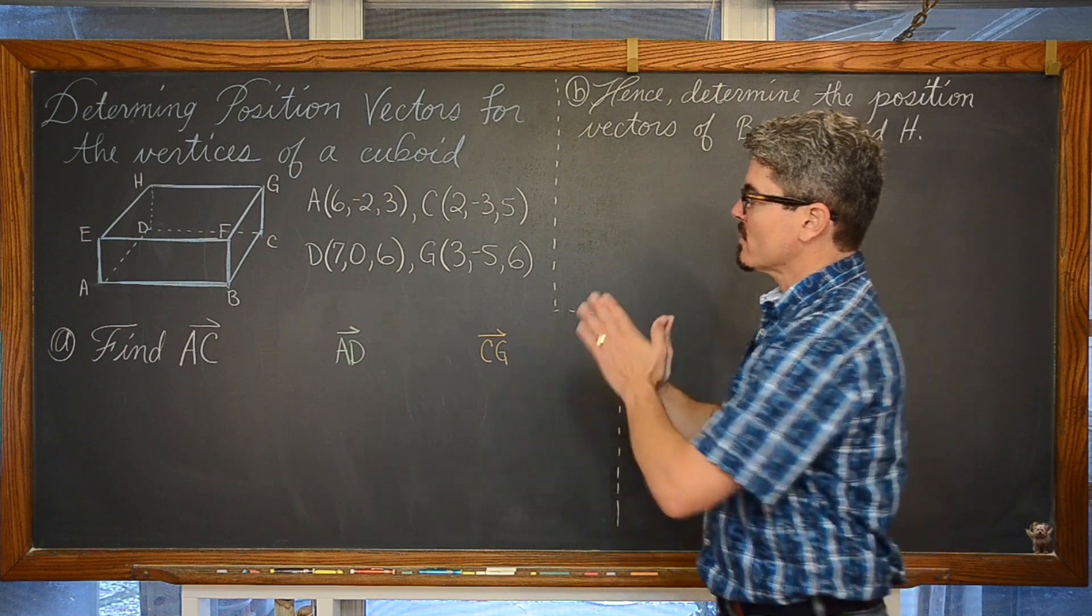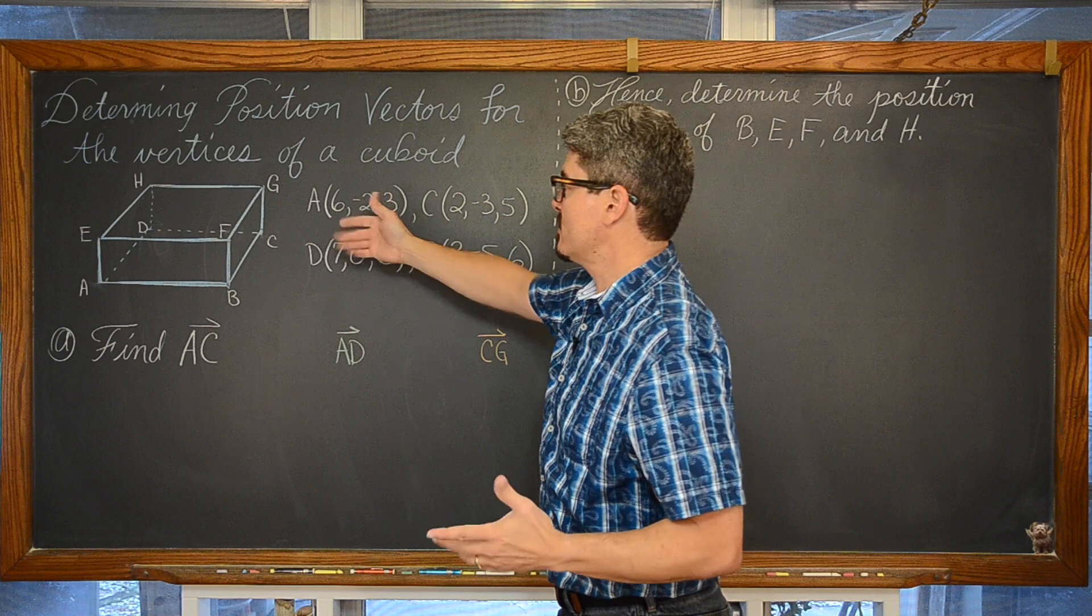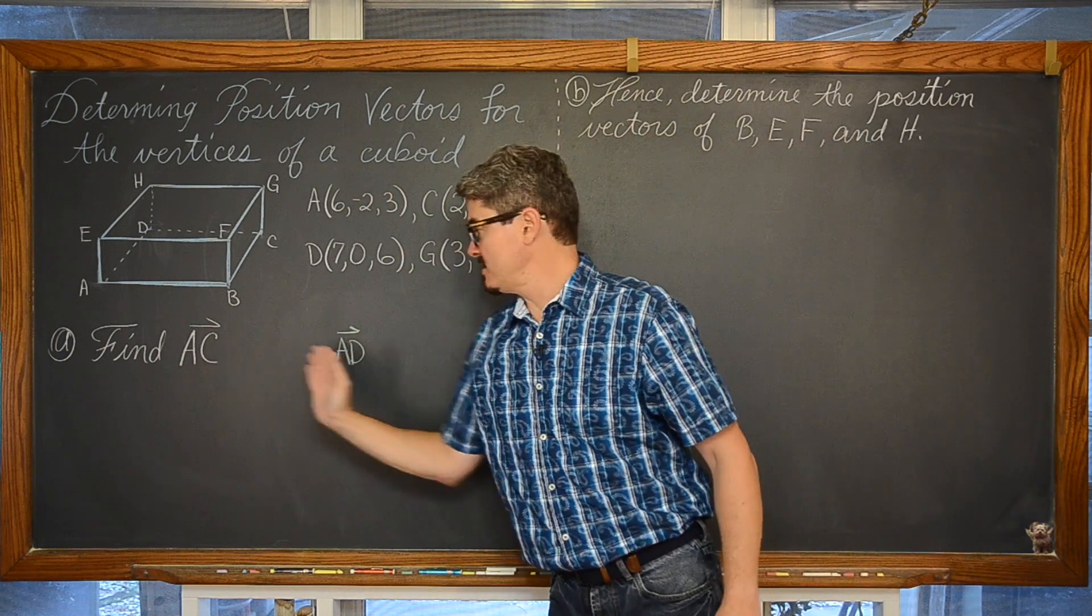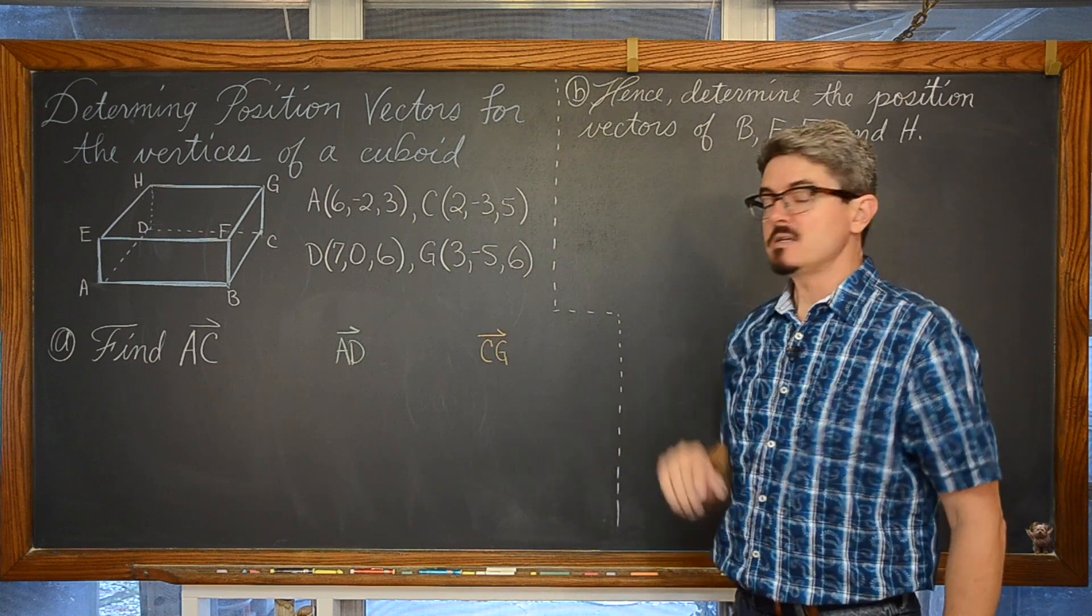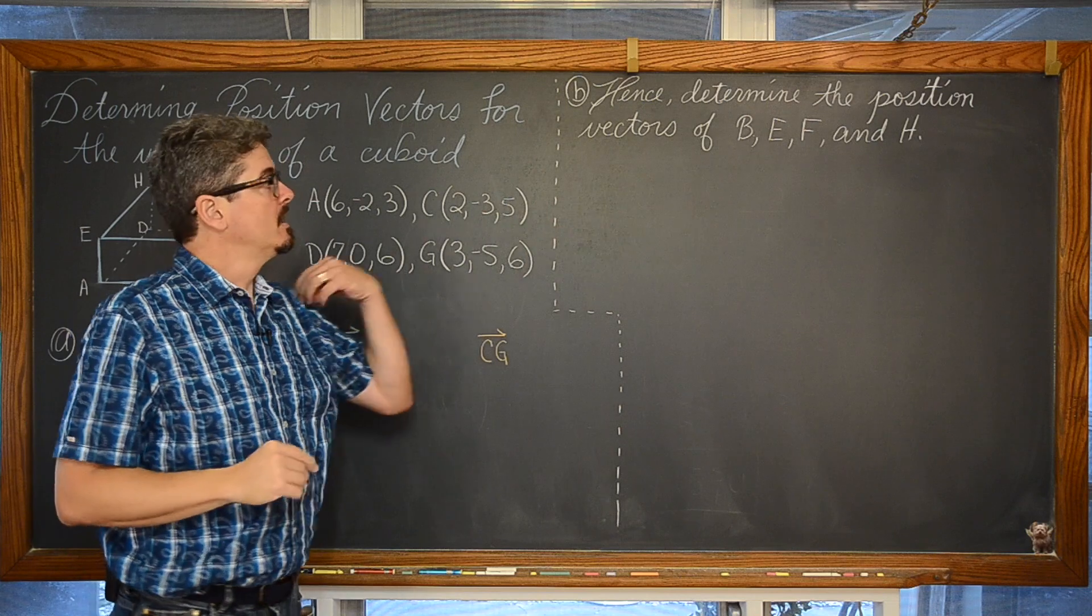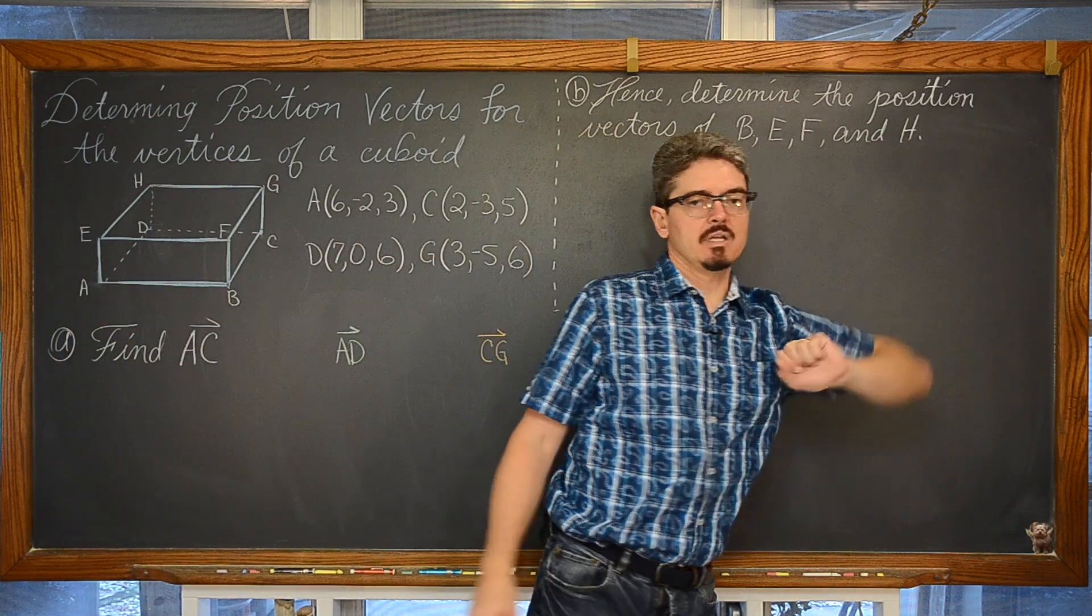We are going to be given some vertices of this cuboid, it may also be a parallelepiped in your problem, and from those vertices we are going to find vector AC, AD, and CG. Then we have part 2 of this question that says, hence, determine the position vectors of B, E, F, and vertices H.